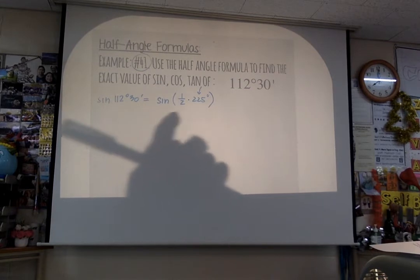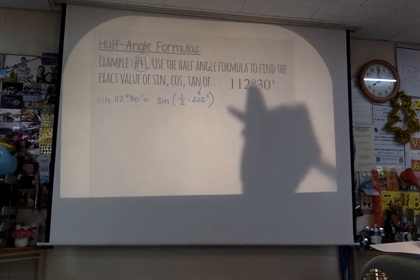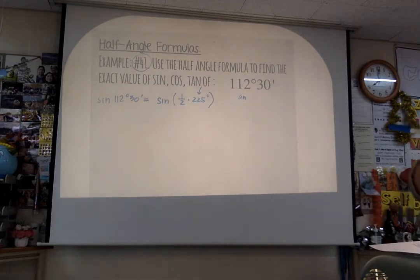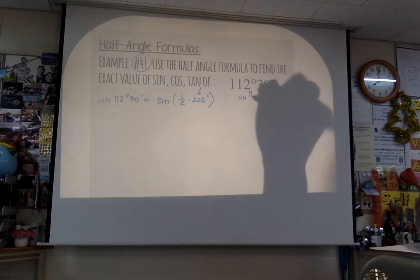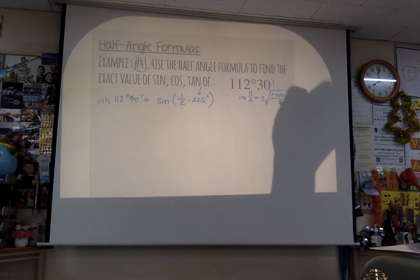This is a half-angle formula. So which half-angle formula will you use? Locate your half-angle formulas. Once you've located your half-angle formula, here's what you're going to do. The sine half-angle formula: sine of u over 2 equals plus or minus the square root of 1 minus cosine of u, all over 2.